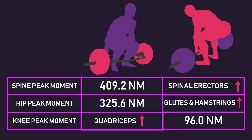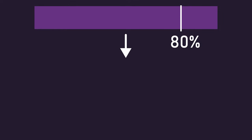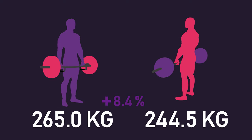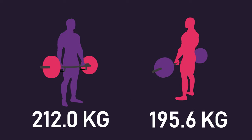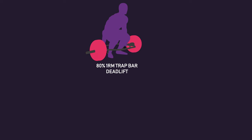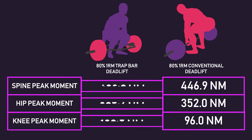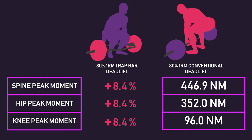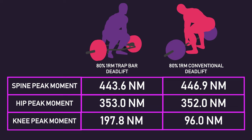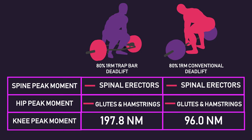However, subjects used the same load on both exercises, which was 80% of the conventional deadlift 1-rep max. The study also tested 1-rep maxes on both lifts. Subjects could lift 8.4% more weight on the trap bar deadlift. When comparing 80% of these values, this would still be an 8.4% difference. Given this, if we compared an 80% 1-rep max trap bar deadlift to an 80% 1-rep max conventional deadlift, we would need to increase the moments shown earlier for the trap bar deadlift by 8.4%, as weight plays a role in calculating moments. Doing this virtually removes the differences in peak spinal flexion moments and peak hip flexion moments. This would suggest that spinal erectors, glutes and hamstrings are involved similarly in both, while the quadriceps would still be involved more in a trap bar deadlift.